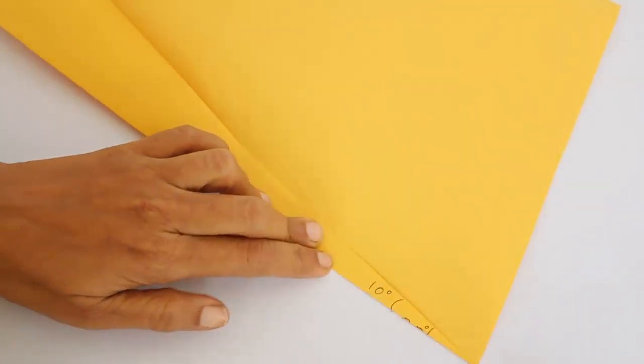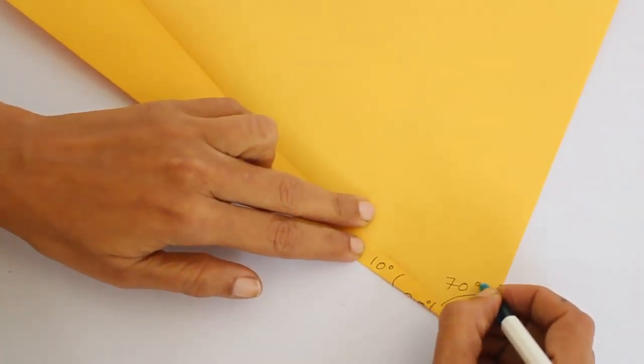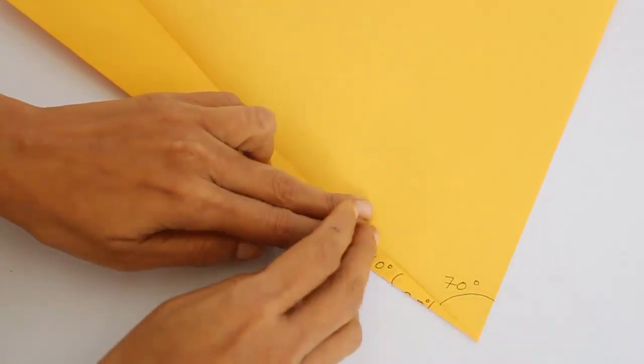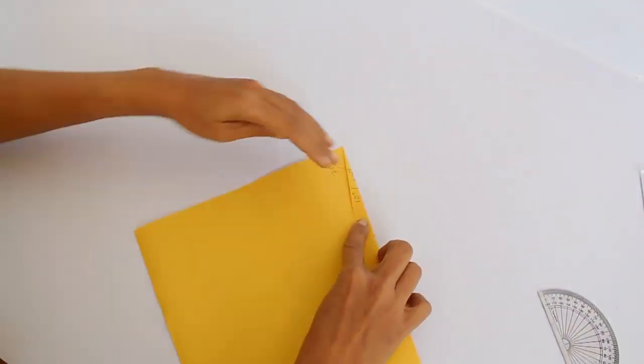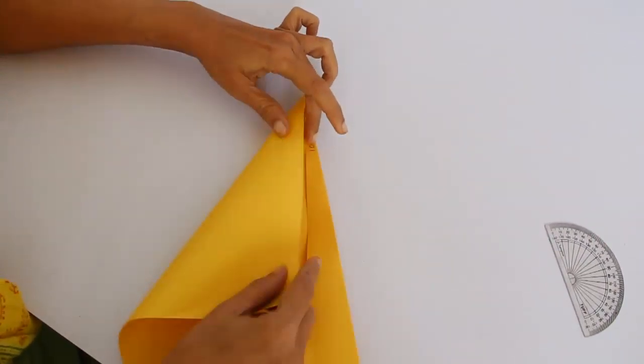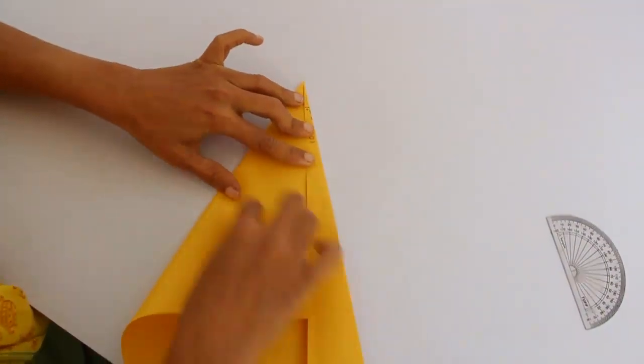The remaining angle will be 90 minus 20, which is 70. Now if we were to fold 60 right here, we can fold this 10 over, and so 70 minus 10 will be 60.